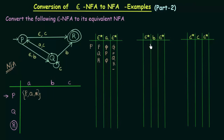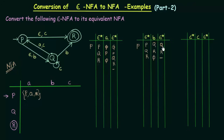Let's do the same thing for input B. P on input B — Epsilon closure of P is P, Q and R. P on input B goes to Q. Q on input B goes to R. R on input B doesn't go anywhere. Epsilon closure of Q is only Q, and R's Epsilon closure is also only R. Since that is Phi there will be nothing there. So the final states we get are Q and R. That means P on input B will go to Q and R.